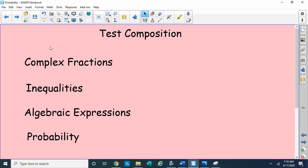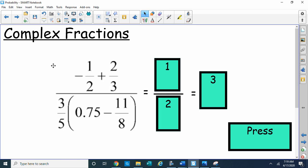Here's what the test composition is made of: complex fractions, inequalities, algebraic expressions, and last of all, probability. So let's go over a few things. Complex fractions. Here's our first complex fraction. Since you are able to use a calculator on this, I would recommend you definitely use it. So first thing I would do is start with the top: negative 1 half plus 2 thirds divided by 5 thirds times 0.75 minus 11 eighths.